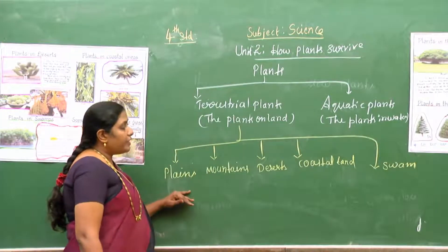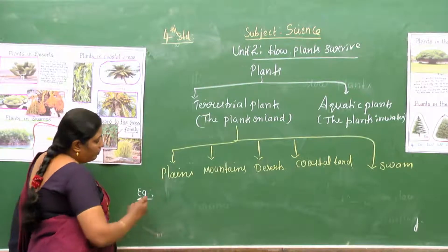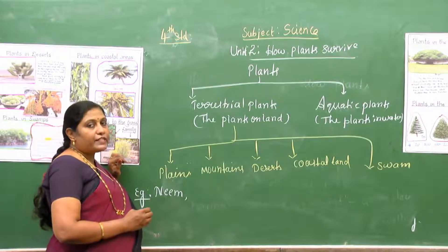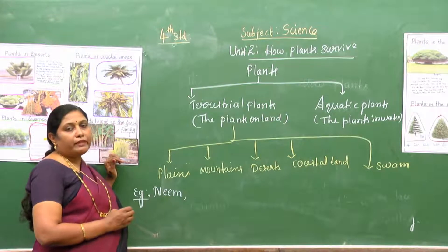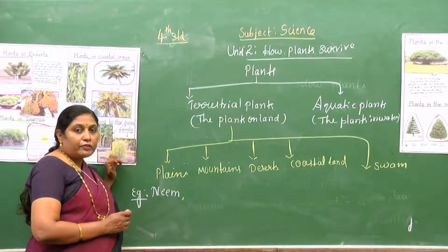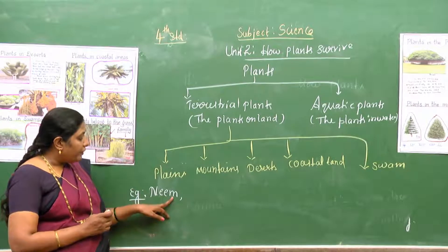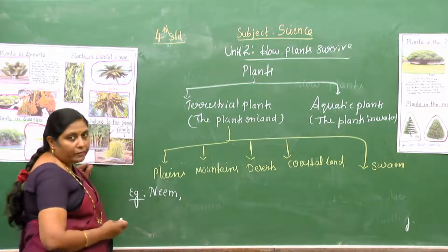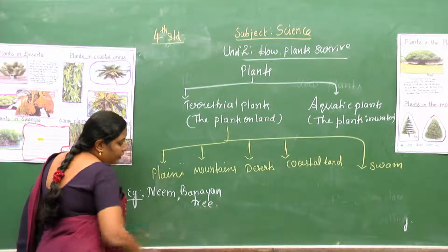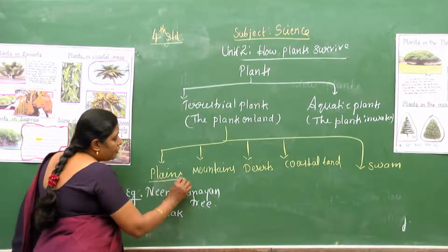The plants which grow on the plains — from garden to forestry areas — include many varieties of trees. For example, neem tree, banyan tree, teak tree, and sandalwood are examples found in the plains. These plants have many branches and numerous leaves.